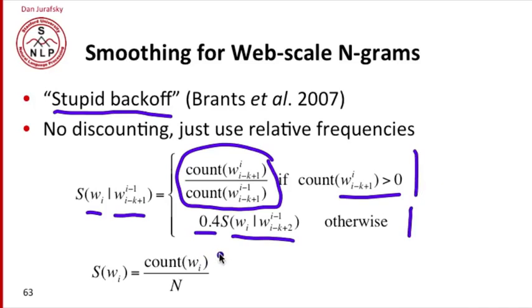And then when I get down to the unigrams, if I don't have anything at all, I just use the unigram. I just use the unigram probability.